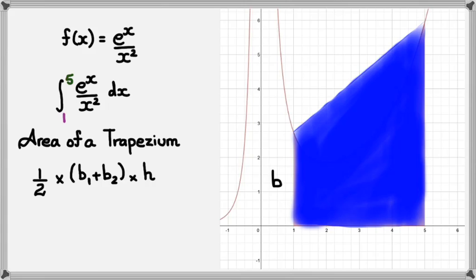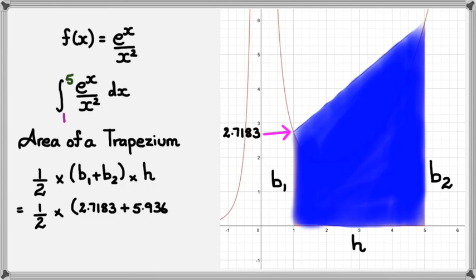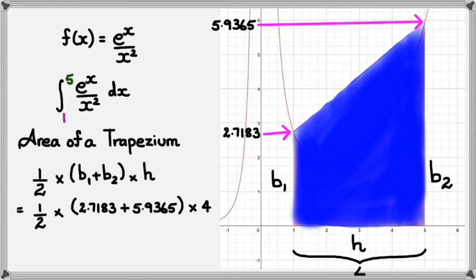In this case, base 1 is the left-hand side and base 2 is the right-hand side. The height is whatever is on the x-axis. Writing this in terms of x and y's, we have half multiplied by b1, which is 2.7183, and b2 is 5.9365. That's multiplied by the height, which is 5 minus 1, or 4. If we work this out, we get the area of the trapezium, which we can say is also the area under the curve.